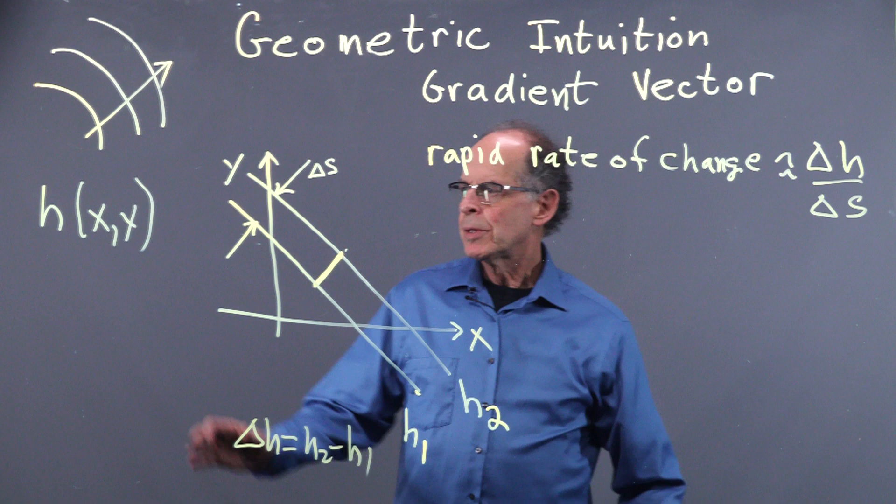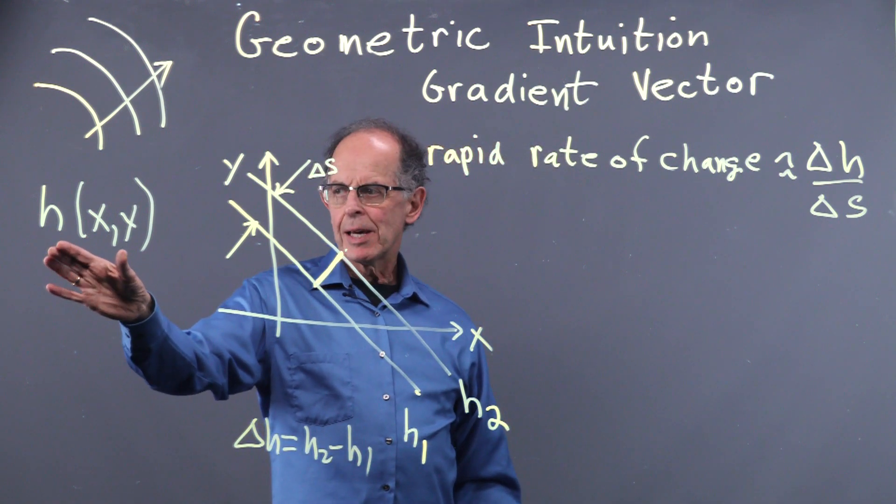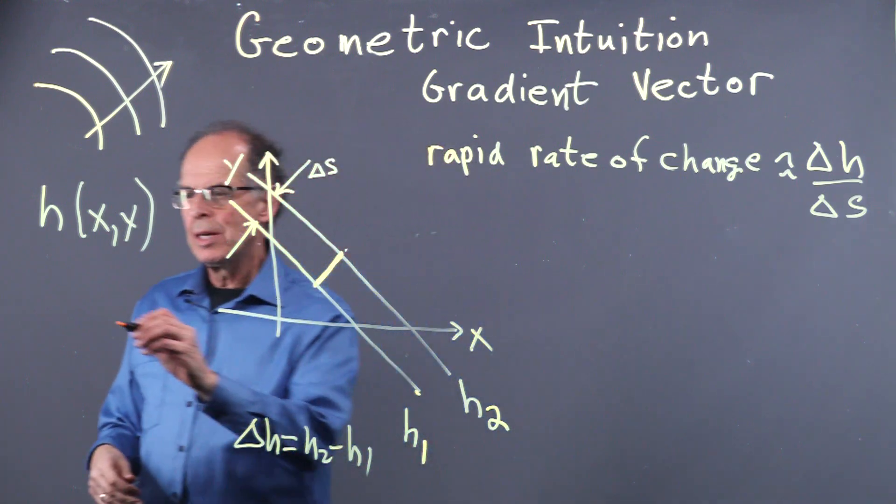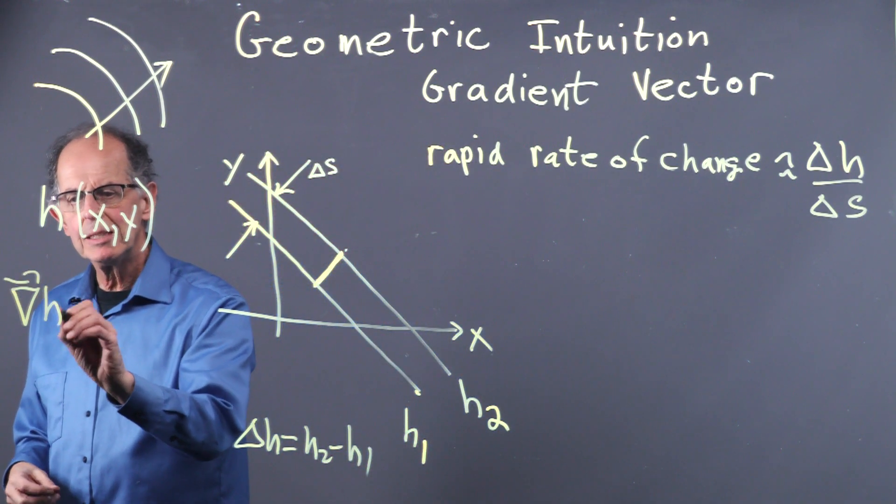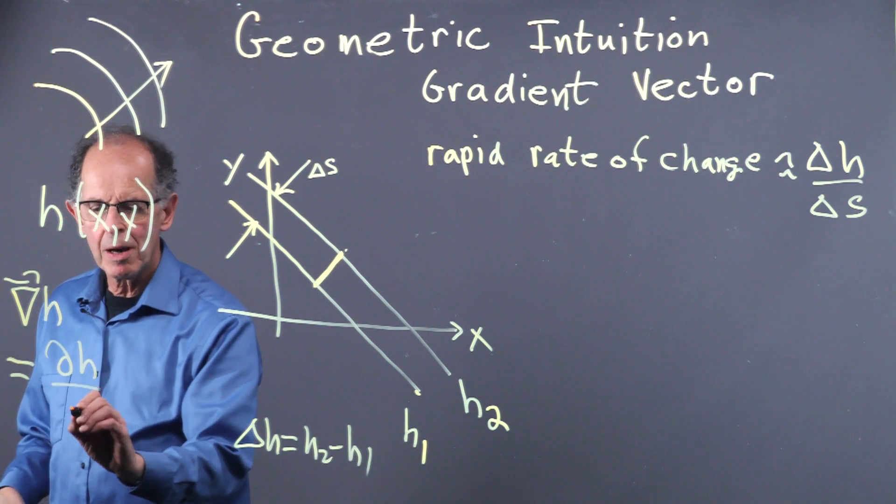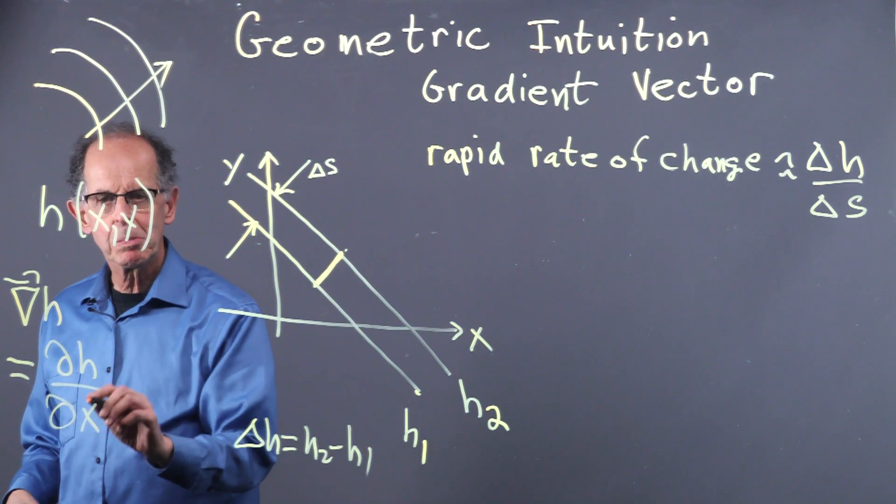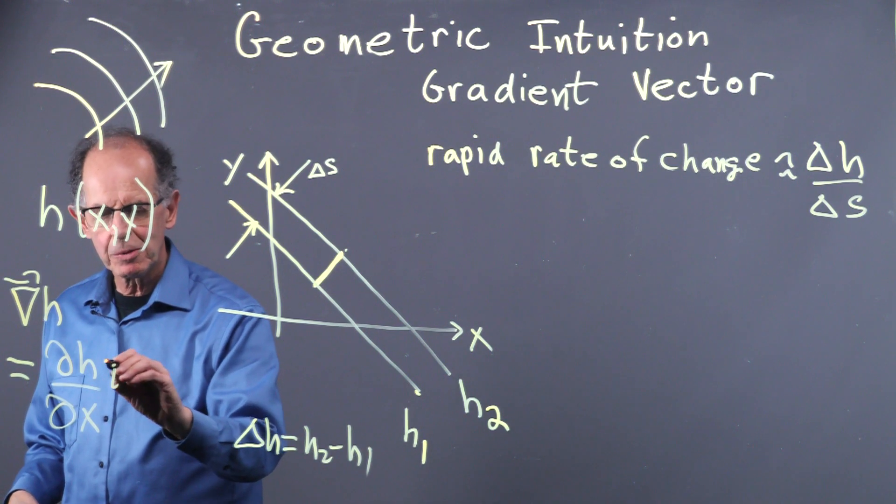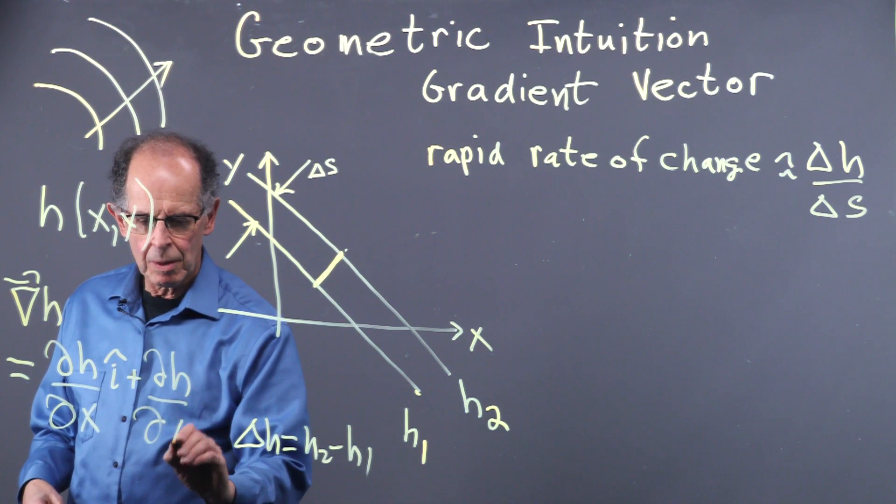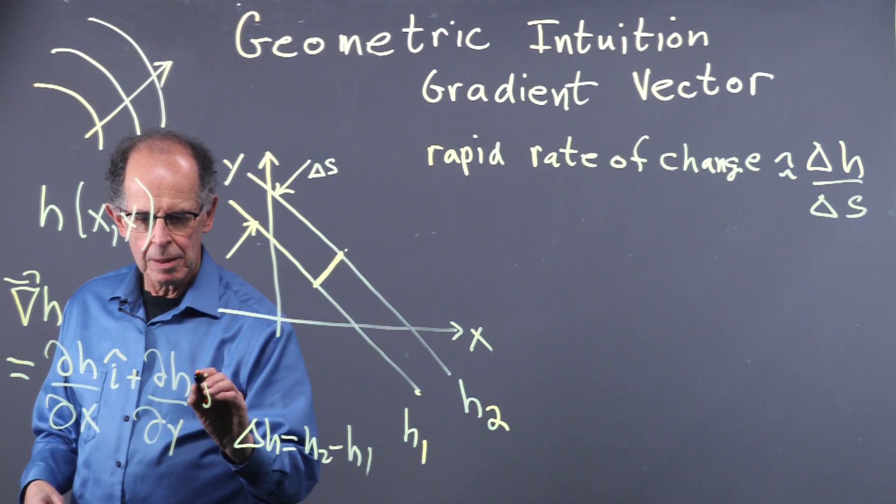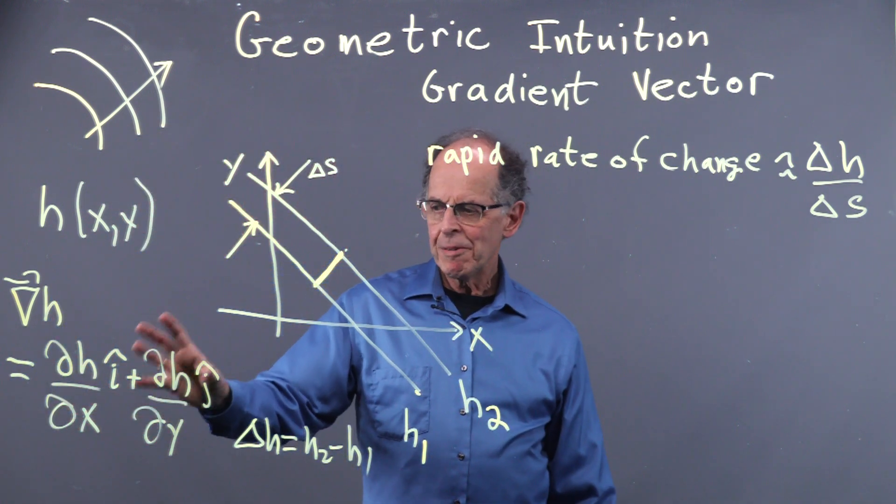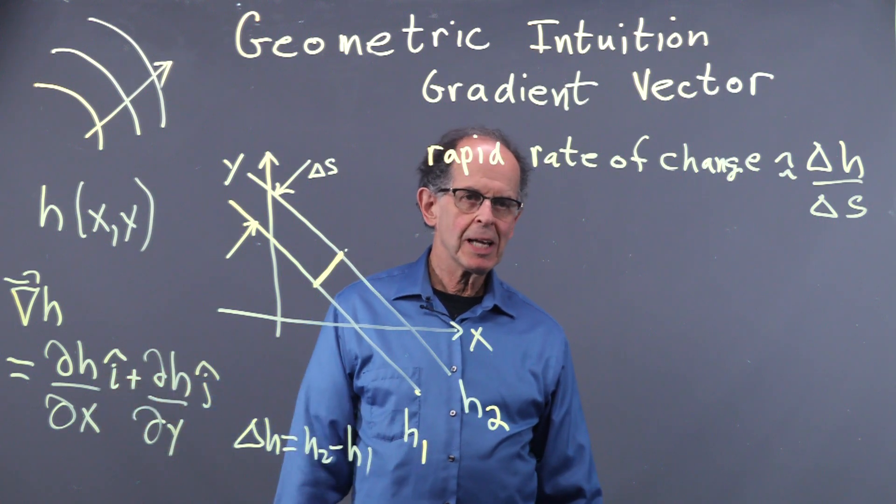Now, we have the height H of X and Y. And we know from basic calculus that the gradient of H is a vector that looks like this. So we're not explaining where this comes from, but we're focusing on intuition. That's how you compute the gradient vector. What we want to find out is what does this thing actually mean?